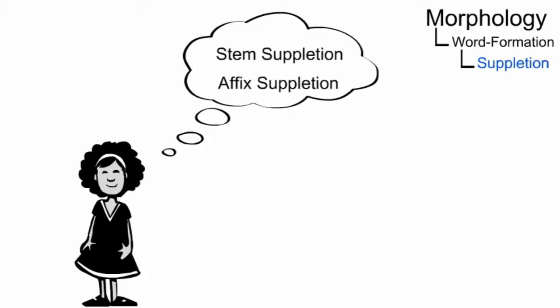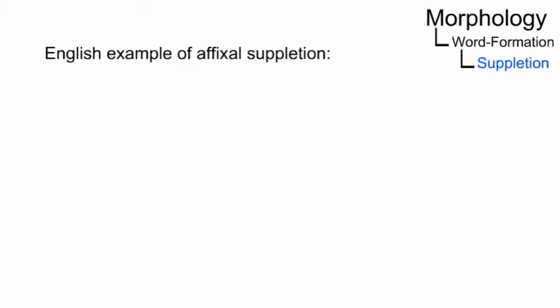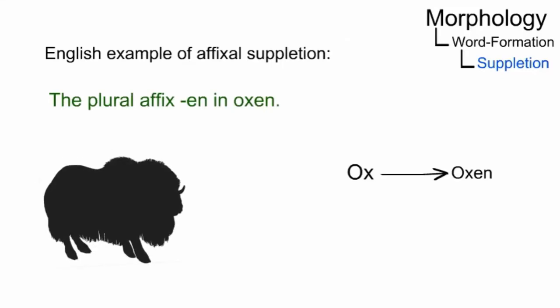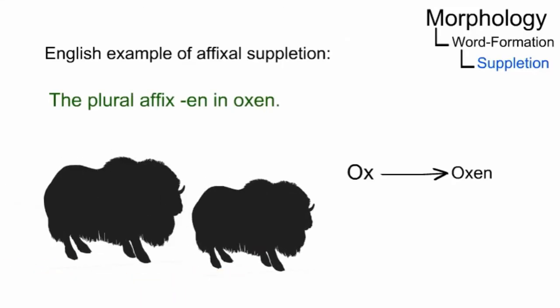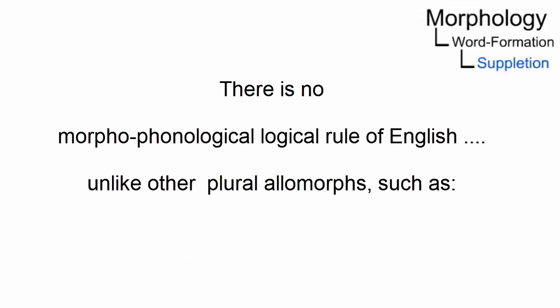Thus, it is customary to distinguish between affixal and stem suppletion. An English example of affixal suppletion is the plural affix -en, as in oxen. It is not motivated by any morphophonological rules of English, unlike other plural allomorphs such as boys and cops.